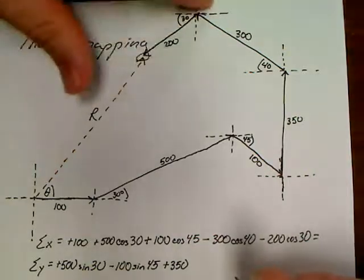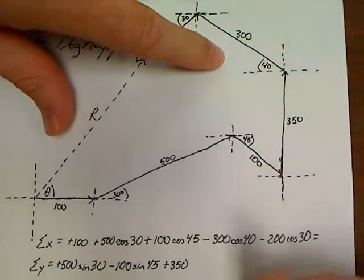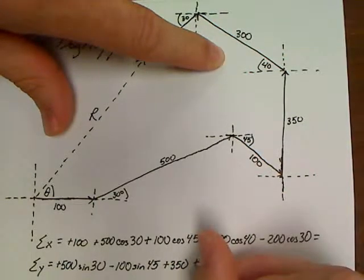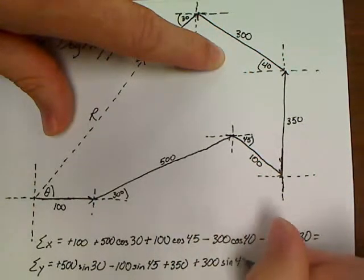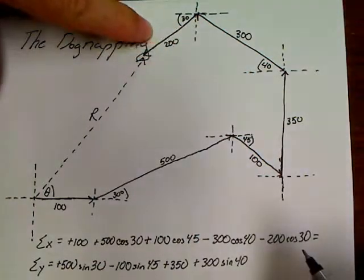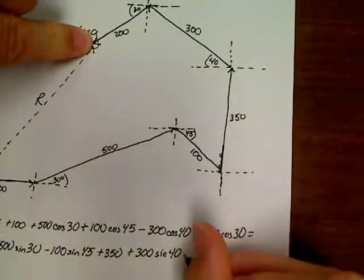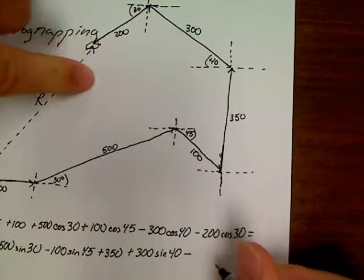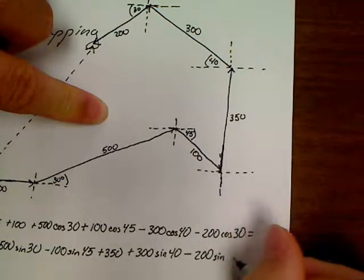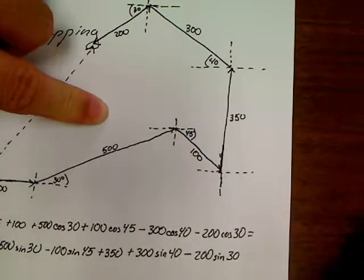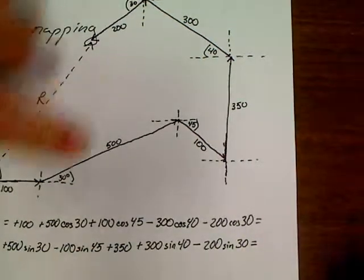Next one has a, let's see. It travels up, so it's got a positive y component. So it's going to be plus 300 sine 40. And then we'll come over here. Last one. Its y value is negative. So we're going to write minus 200 sine 30 on that one. Alright.